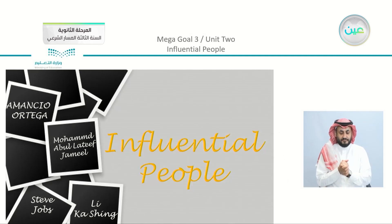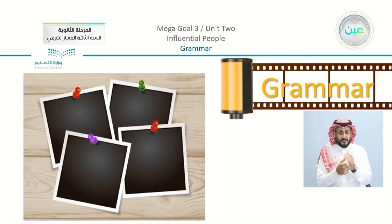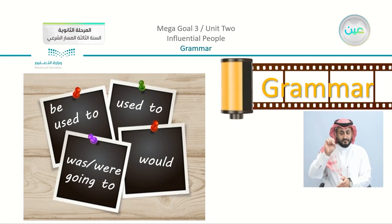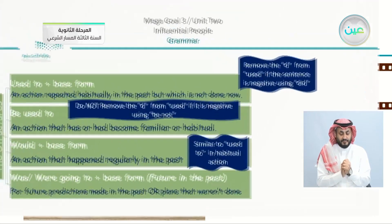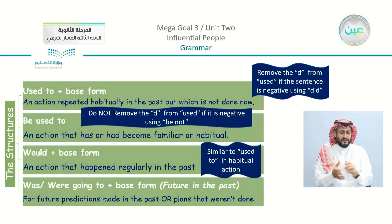So we have our unit, which is about influential people. We talked about different characters. And then we moved on to the grammar lesson, in which we studied the four structures: used to, be used to, was or were going to, and would. Now we have our structures here — the graph that we planned and summarized in the lesson before.